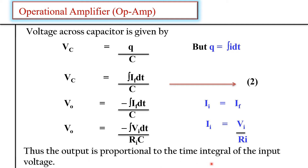Thus, the output voltage is proportional to the time integral of the input voltage, where R and C are assumed constant. The amplitude of the output signal depends on the values of RI and C. As you can see, the output is the integration of the input, so using this circuit we can integrate any input signal. The negative sign indicates that the output is 180° out of phase with the input.